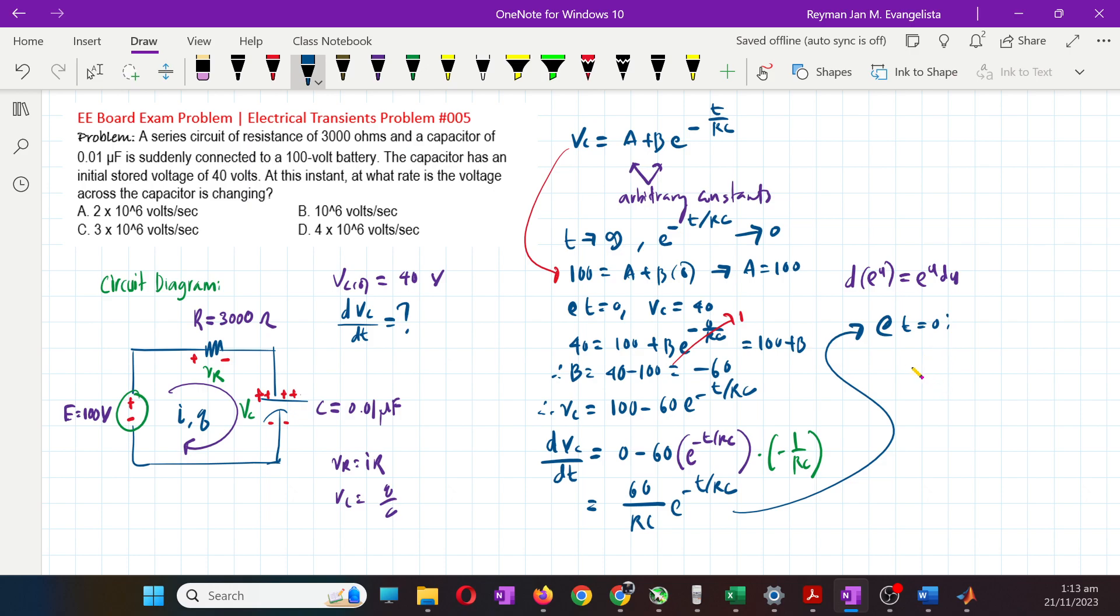At this instant, meaning when t is 0, what is our dVc/dt? It's 60 over - what do we have? We have 3000 ohms, and our C is 0.01 microfarad or 0.01 times 10 to the negative 6. E raised to negative 0, and this is 1.